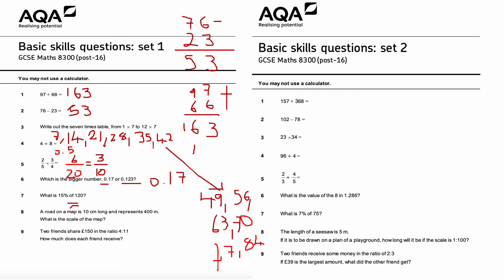Question number seven: what is 15% of 120? 10% of 120 is 12 — you divide by 10, so just take off the zero to get 12. 5% is half of 10%, so half of 12 is 6. Therefore 12 plus 6 equals 18.